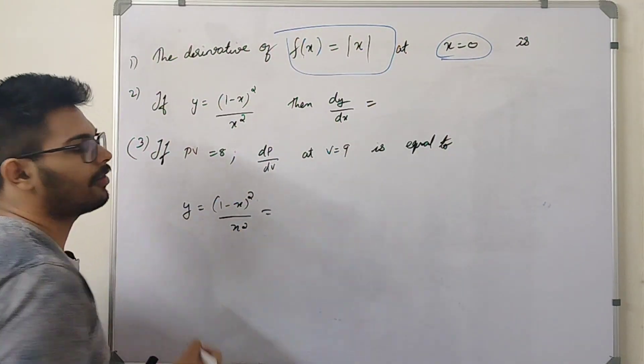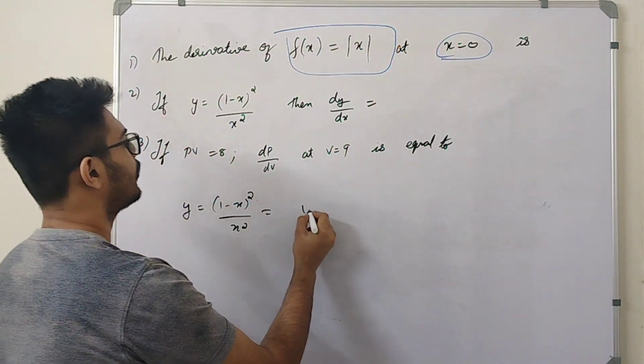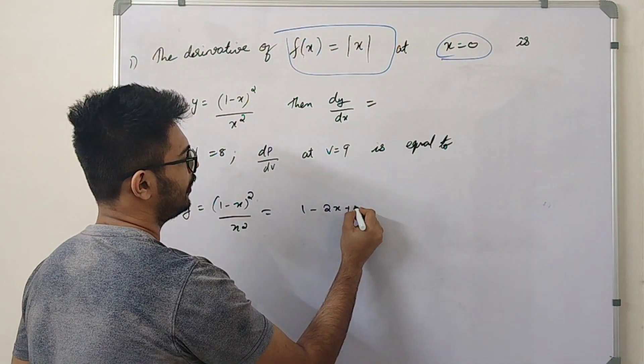If a minus b is the whole squared, then a squared minus 2ab plus b squared.